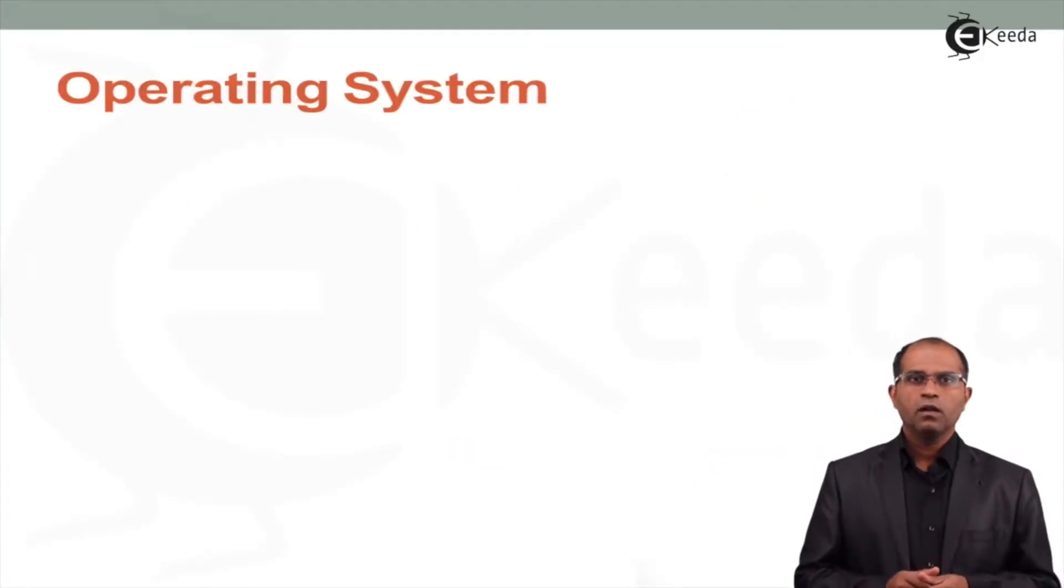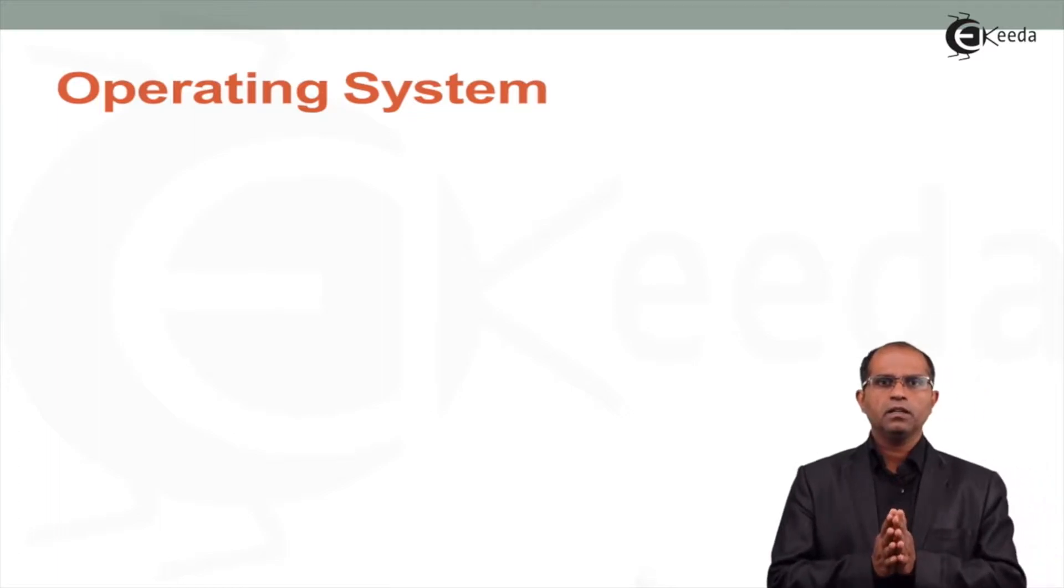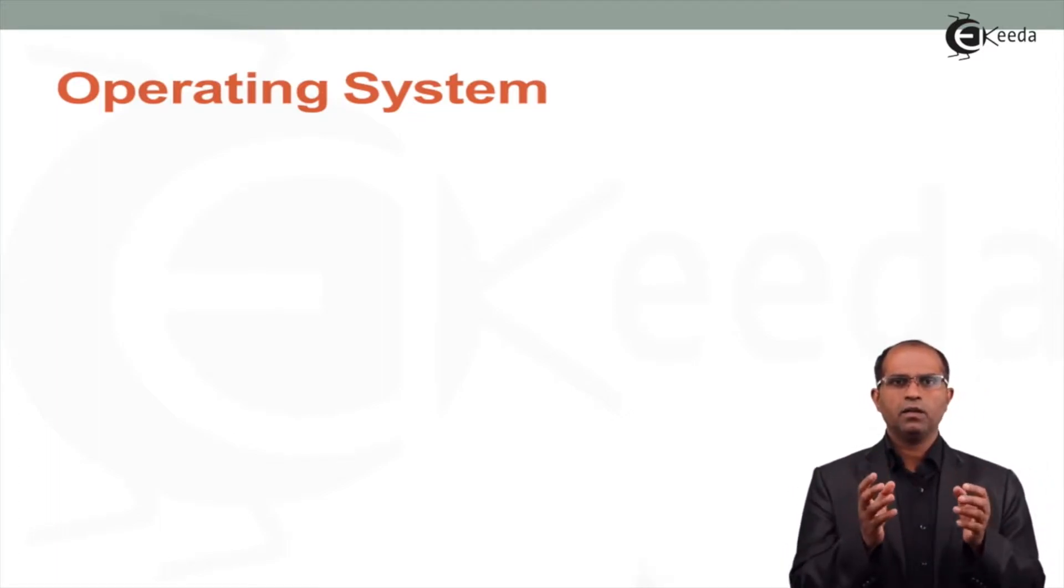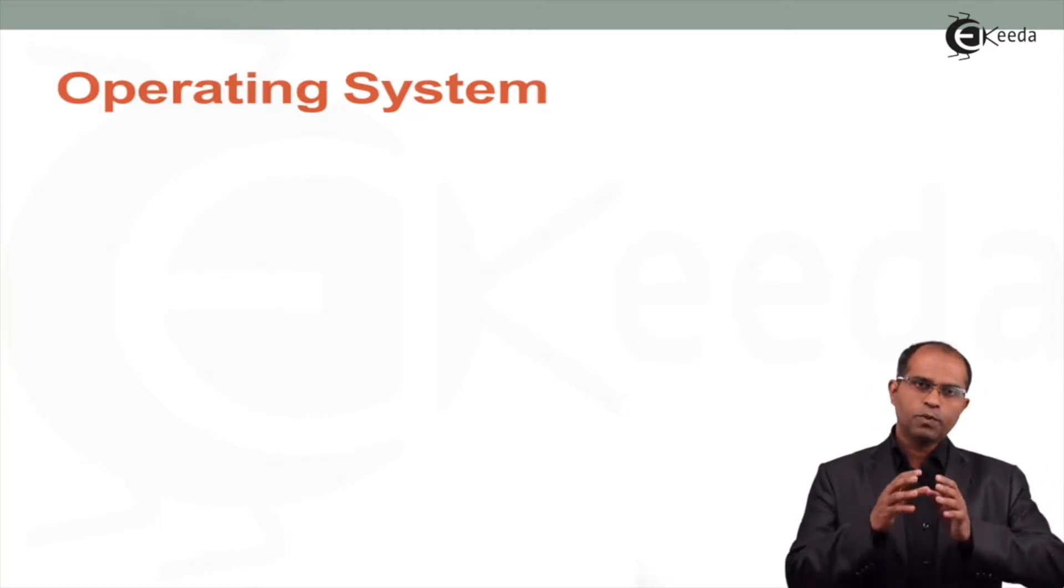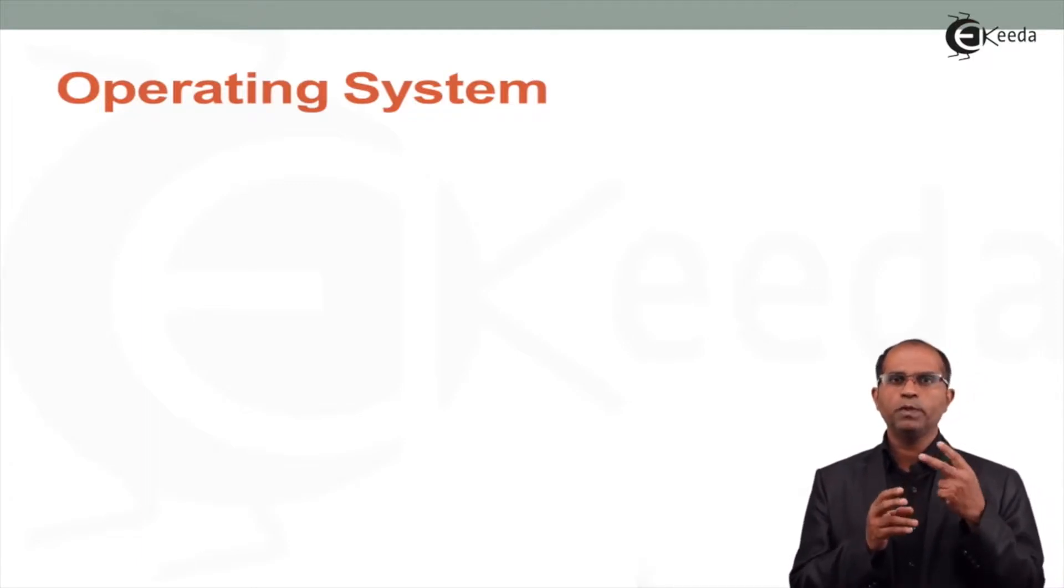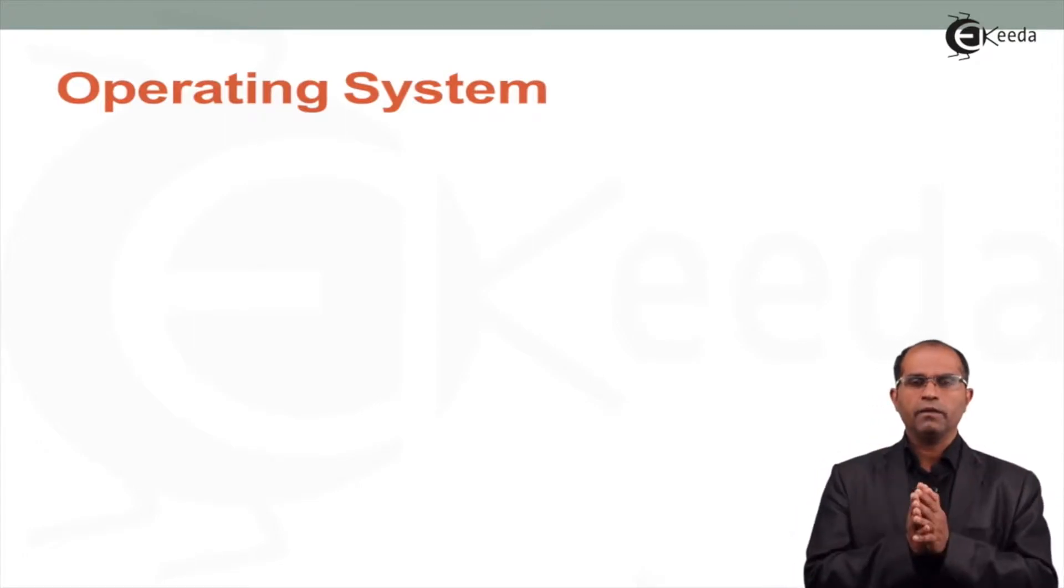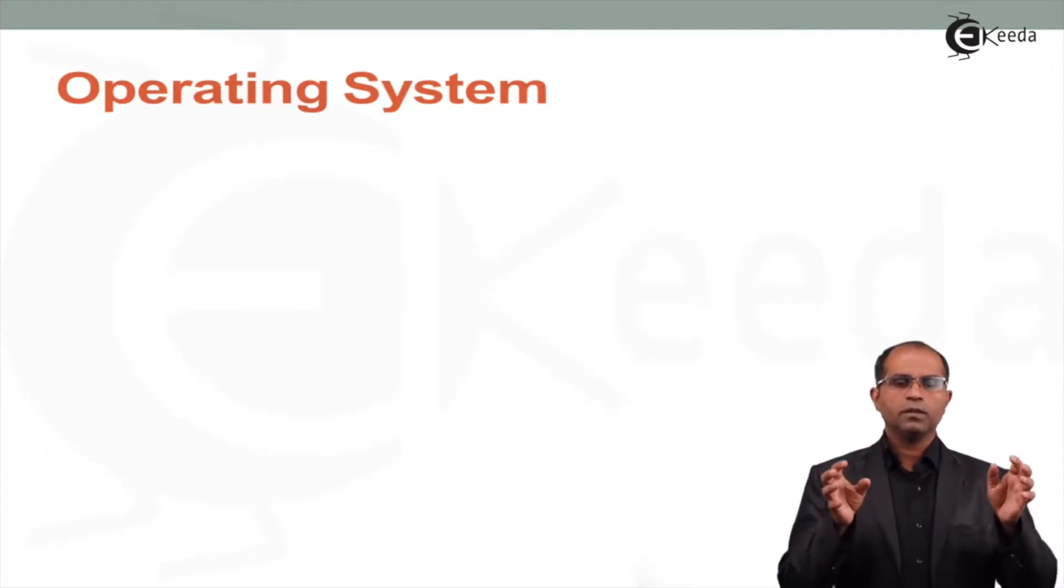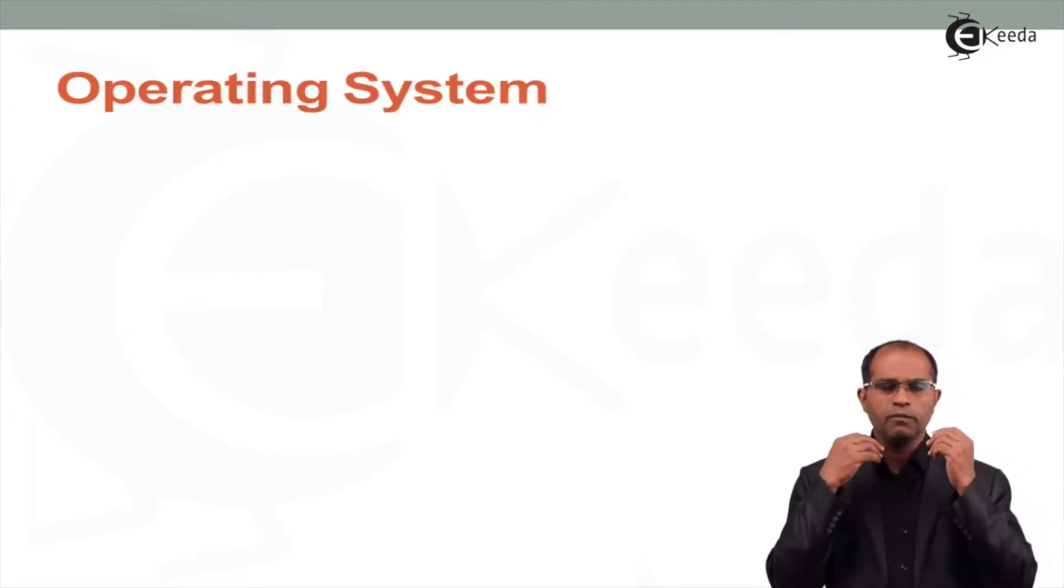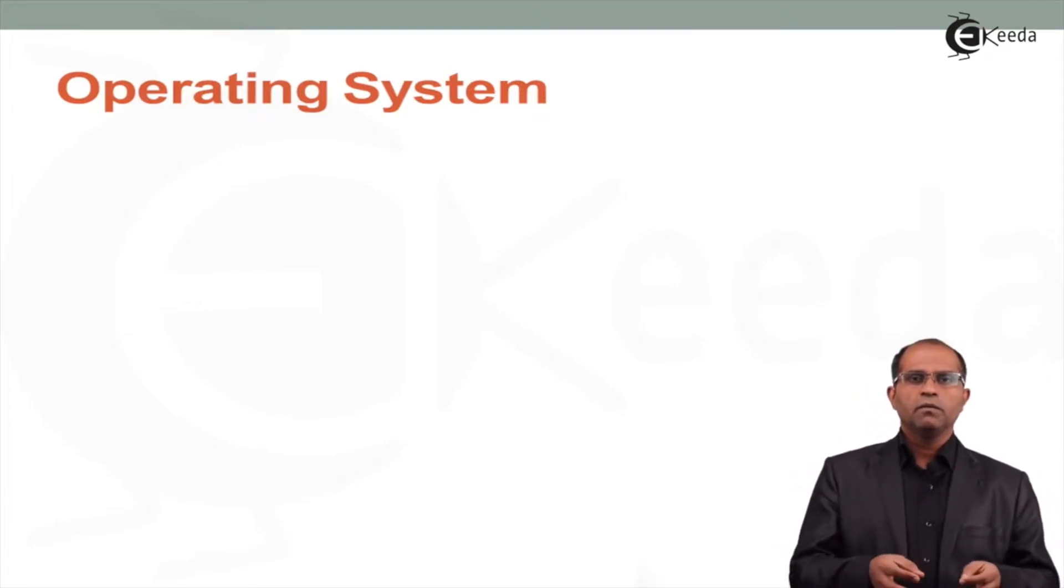Hello friends, in the previous videos we have seen that hardware or a system was basically given by two people called Alan Turing and John von Neumann. Now the hardware is ready. They thought of the processor, the input-output device, the control unit, and the memory unit.